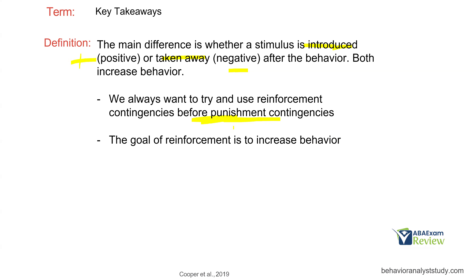To summarize: the goal of reinforcement is to increase behavior. If you have a contingency — A, B, C — and your behavior is not changing, you're not reinforcing. Just because you think you're providing reinforcement doesn't mean you are. How is that behavior changing in the future? That's the key question.